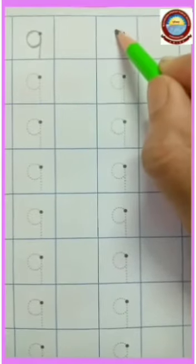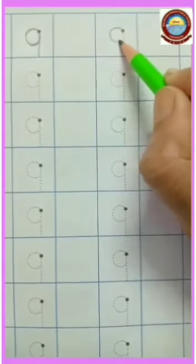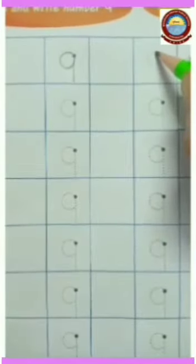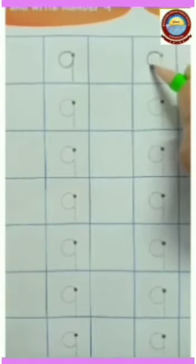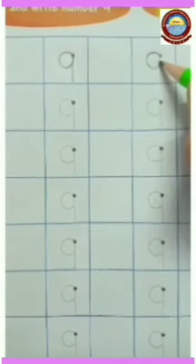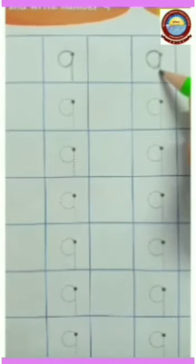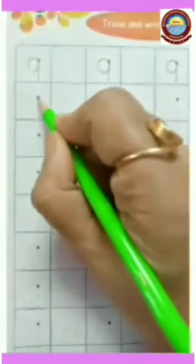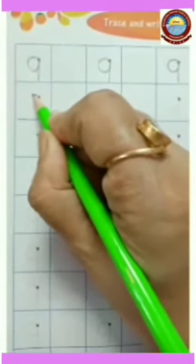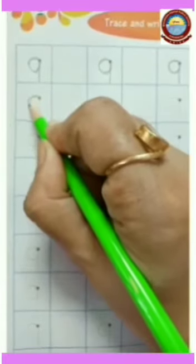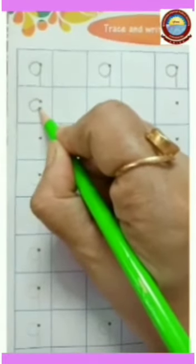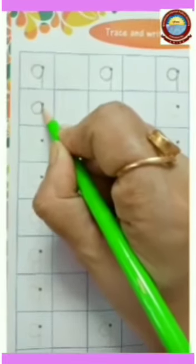Which number is this? Number nine. Kids, start from the dot. First we make a curve, after that go to the top and draw a standing line down like this. Write it once more: start from the dot, make a curve down, then go up, and then make a standing line.